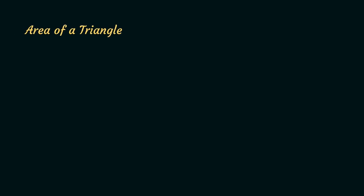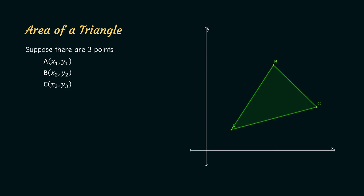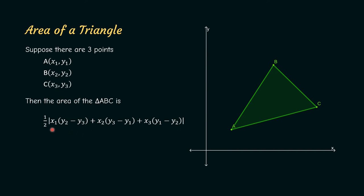We will now see the last formula: the area of a triangle. Suppose there are 3 points on the plane: A(x1, y1), B(x2, y2), and C(x3, y3), and we need to find the area of triangle ABC. The area equals half the modulus of x1(y2 minus y3) plus x2(y3 minus y1) plus x3(y1 minus y2). This is a very long formula, so we will use a trick to remember it. If you observe carefully, there is a cycle 1, 2, 3 — like x1(y2 minus y3), x2(y3 minus y1), and x3(y1 minus y2). If you remember it using this cycle it will be easier.